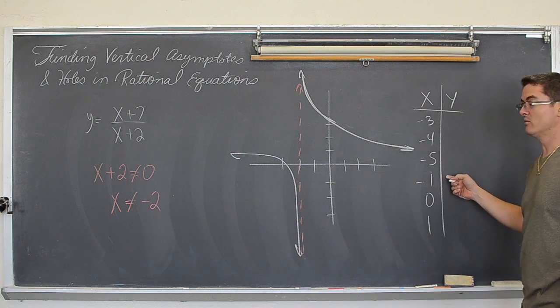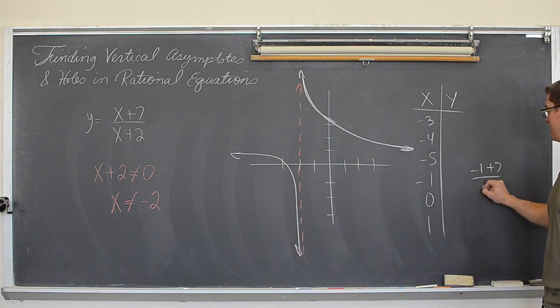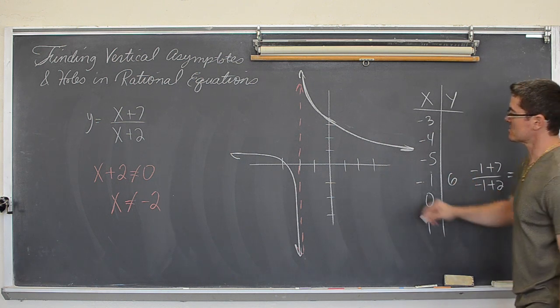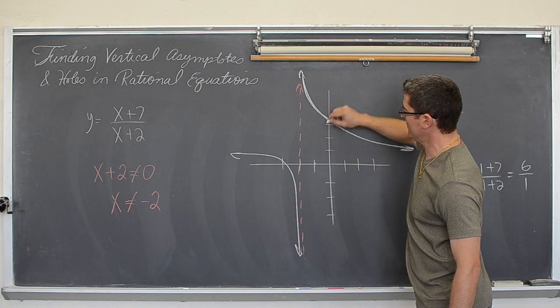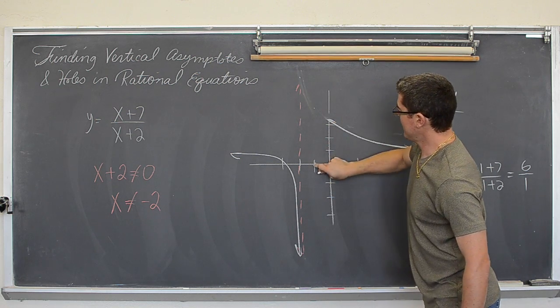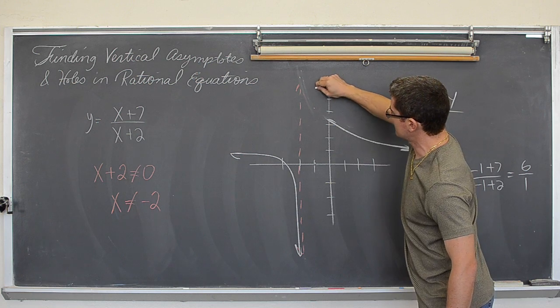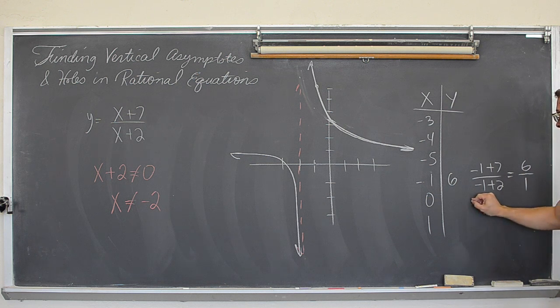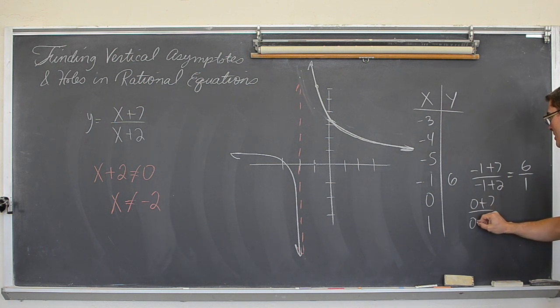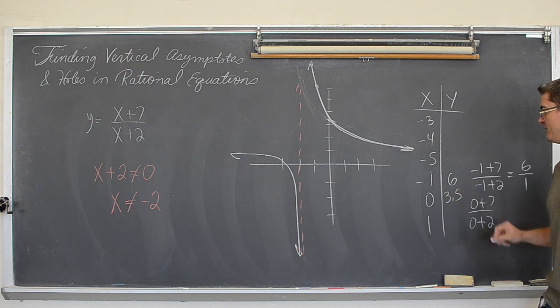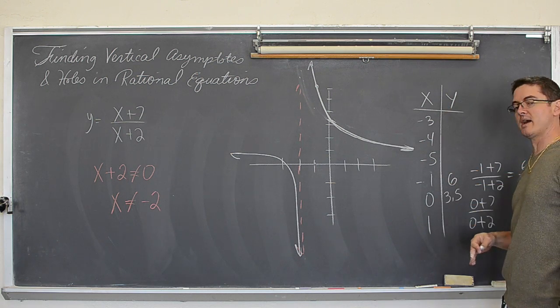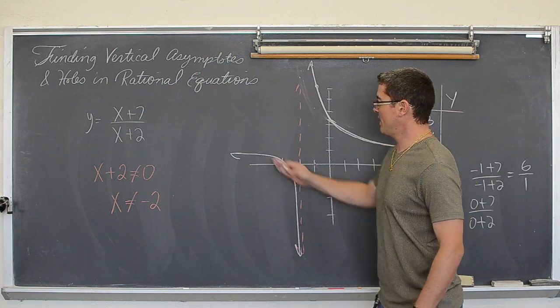Like negative one would be negative one plus seven over negative one plus two. So that's six over one. So at negative one, we are at six. So at negative one, my drawing is certainly not drawn to scale very well, would be up here at six. So the graph actually looks like this. And I can plug in zero and work it out. Zero plus seven over zero plus two, which is three point five, and so on. So I'm using some values to the left of the vertical asymptote, and I'm using some values to the right of the vertical asymptote, to kind of get an idea of what the graph is doing.